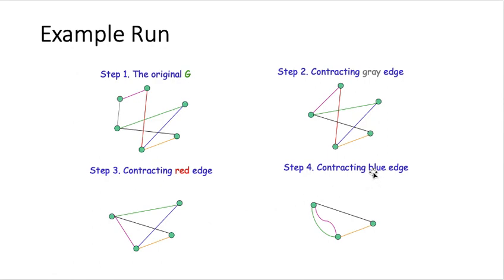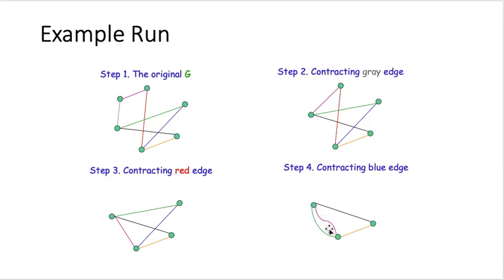In the next step, we contract the red edge, moving those two nodes together and combining them. When we combine them, the pink edge originally linked to one is the same as the pink edge linked to the other. After contracting the blue edge, this merges together, and the green edge now joins the resulting node. We see that between two nodes, there can be multiple edges.